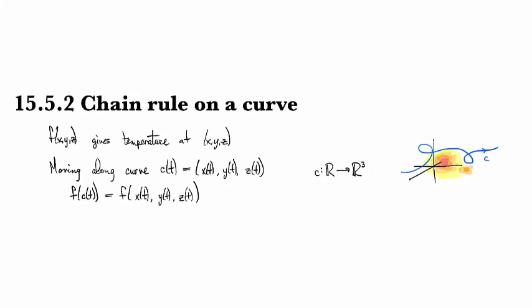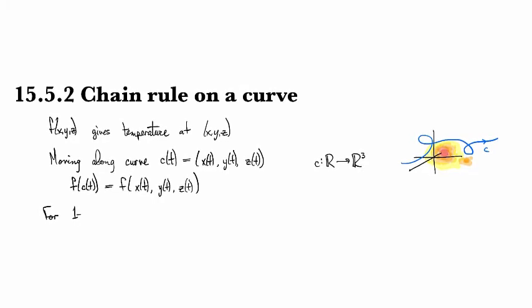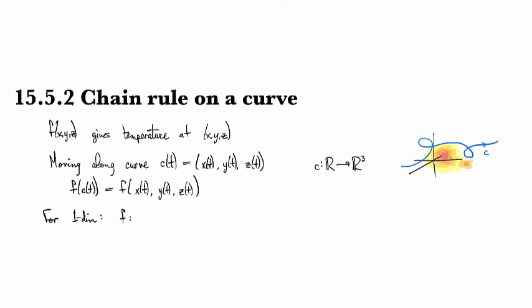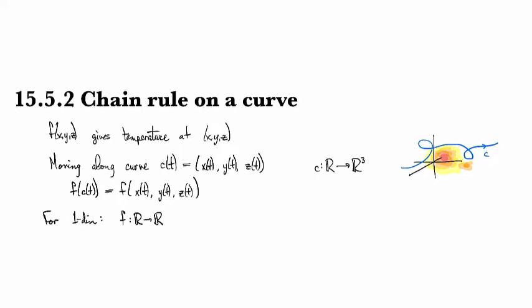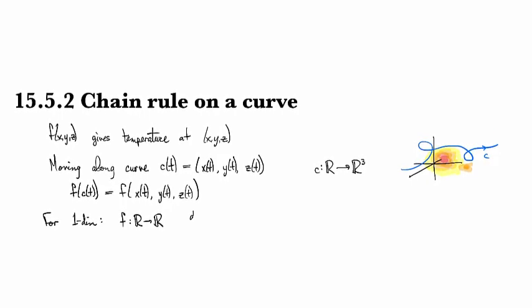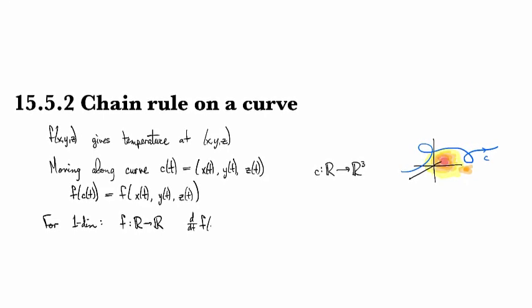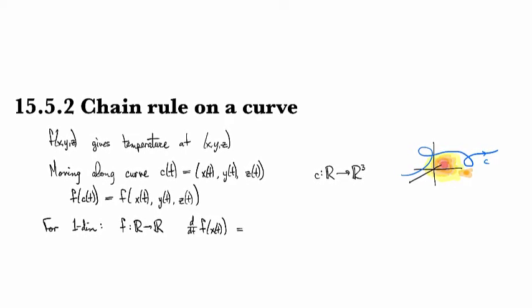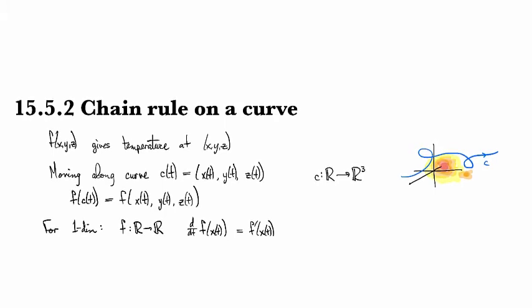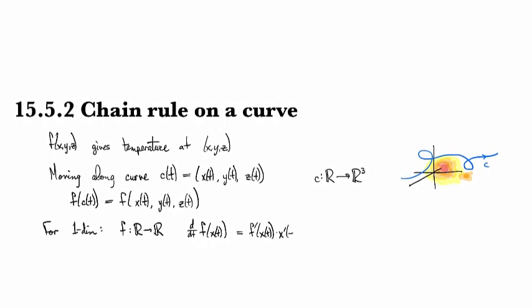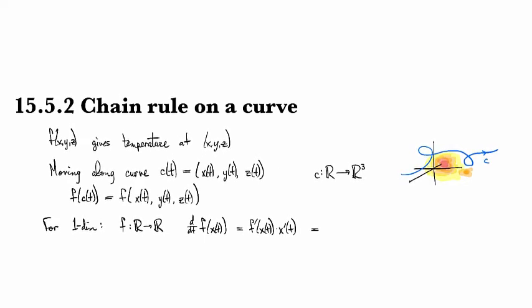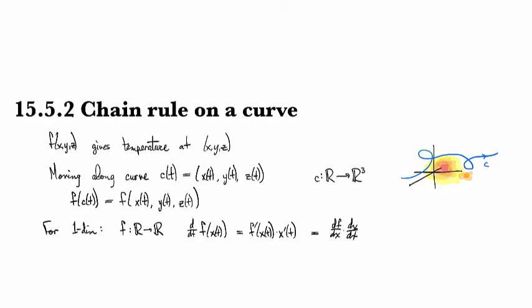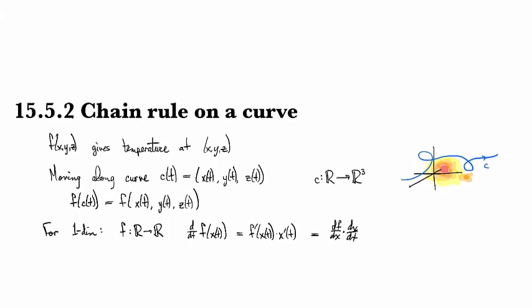For one dimension, from your previous calculus class, you have a function F from R to R. If you want to look at the time rate of change of F of a single variable X of T, then this is going to be F prime of X of T times X prime of T, or you might write this as dF/dX times dX/dT. That's the standard, hopefully familiar, chain rule from single variable calculus.